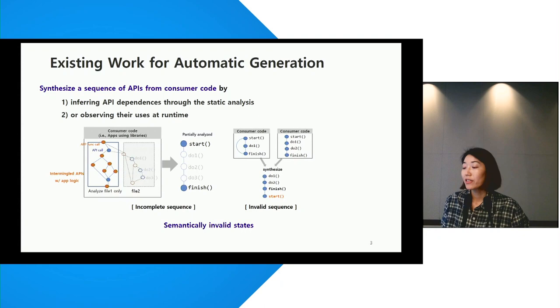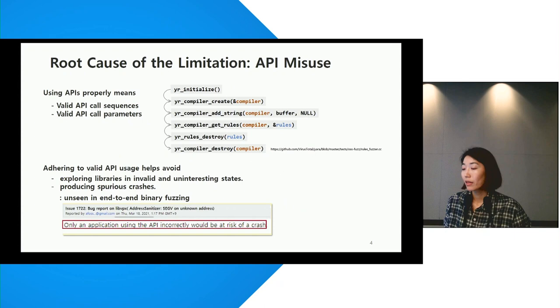But there's a risk of exploring a library in semantically invalid states. Partially analyzing the consumer code due to its large size may result in incomplete API sequences, and synthesis from complex code can generate invalid sequences.